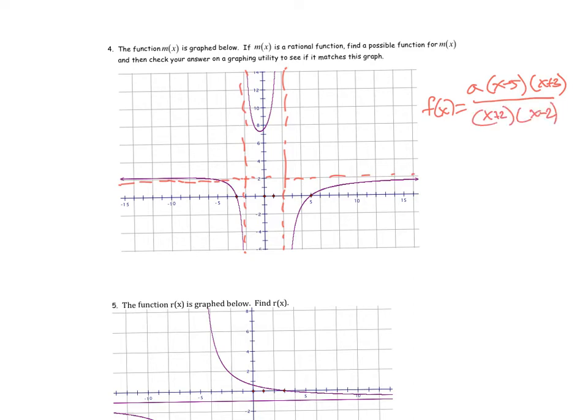Right now, if we were to leave it as is and say a was one, you would have the leading coefficient at the top would be x squared, and the denominator would also be x squared. So that would mean the degrees are the same, so you'd have a horizontal asymptote of y equals one. Well, I have a horizontal asymptote of y equals two, so I just want to change that a now to be two.